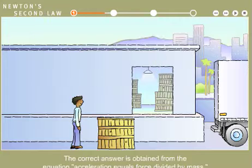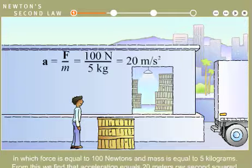Correct. The correct answer is obtained from the equation acceleration equals force divided by mass, in which force is equal to 100 Newtons and mass is equal to five kilograms. From this, we find that acceleration equals 20 meters per second squared.